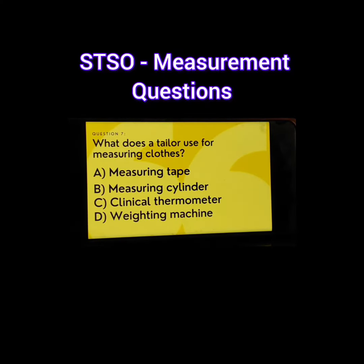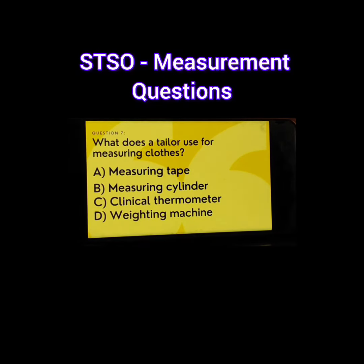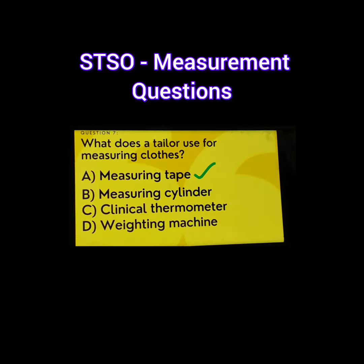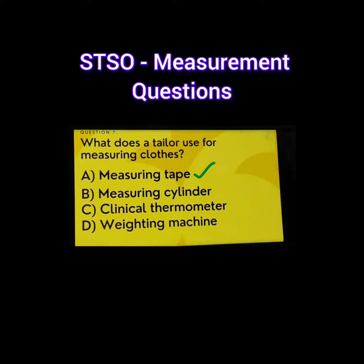Question number 7. What does a tailor use for measuring clothes? A. Measuring tape, B. Measuring cylinder, C. Clinical thermometer, D. Weighing machine. The correct answer is A. Measuring tape.